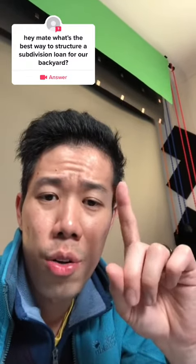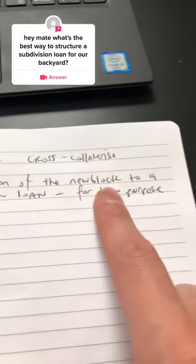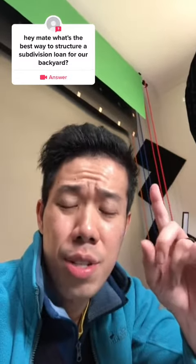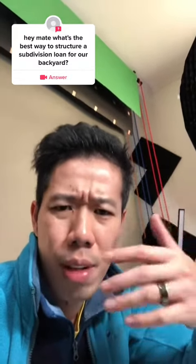Don't try to get one loan for two of these lots. Make sure the portion of the new block goes to a new loan. This is for tax purposes, so it's easier for your accountant to calculate the interest against that new lot for negative gearing.